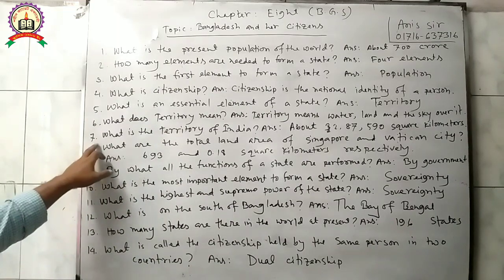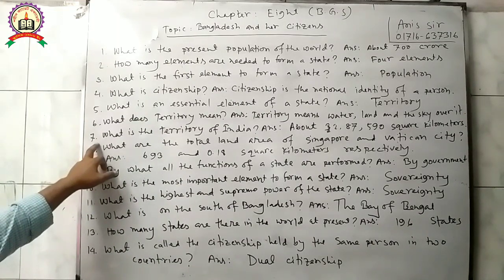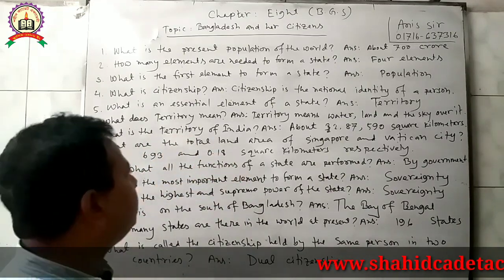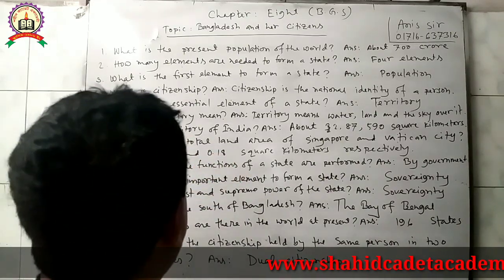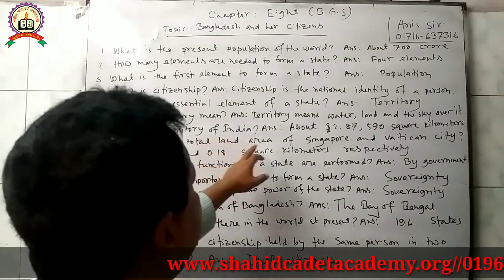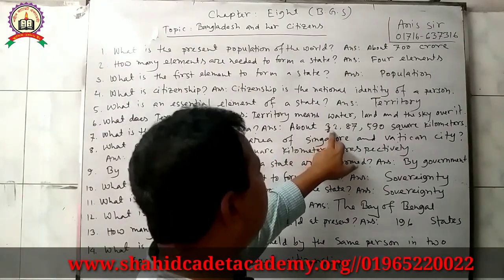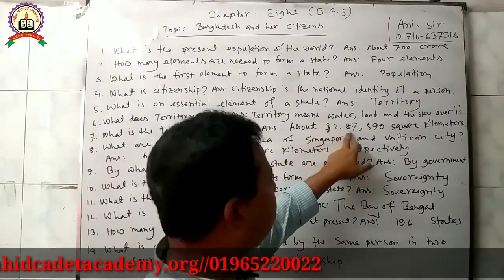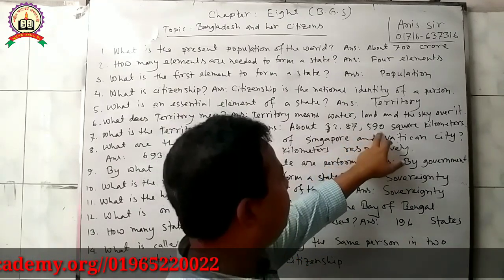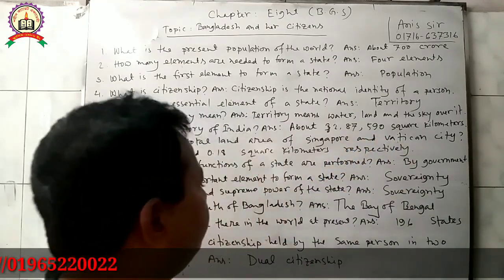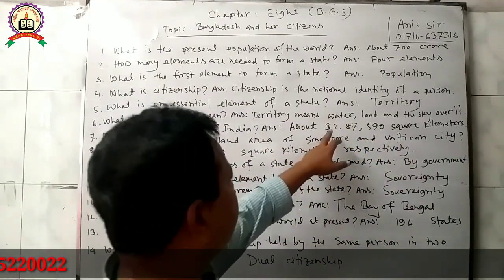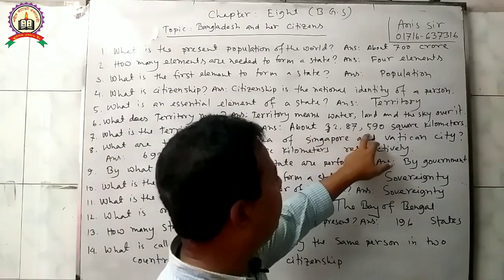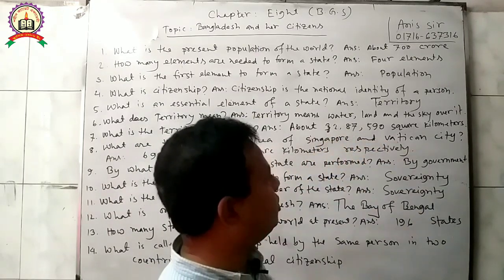Question 7: What is the territory of India? Answer: The territory of India is about 32,87,590 square kilometers.